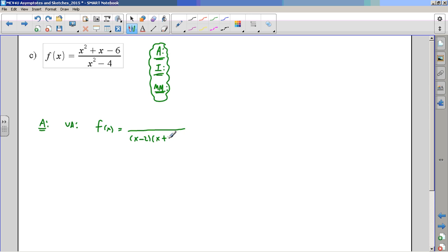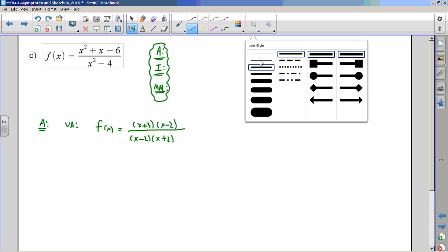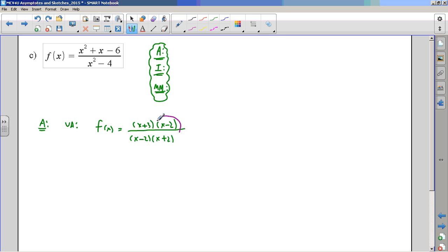It's a difference of squares on the bottom, easy trinomial on the top, numbers that multiply to get negative 6 and add to get 1. There's that case, isn't it? That case where I have a factor on the top and a factor on the bottom. So those can cancel.